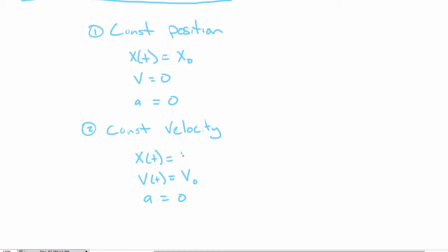Initial position plus velocity times time. So that is position as a function of time: x = x₀ + v₀t. If you want to double check this, one way is to check the units. We have meters on the left-hand side, x₀ is in meters, v₀ is in meters per second, and you multiply that by t in seconds to get meters. We wrote this down yesterday a little bit — let's talk quickly about where it came from.